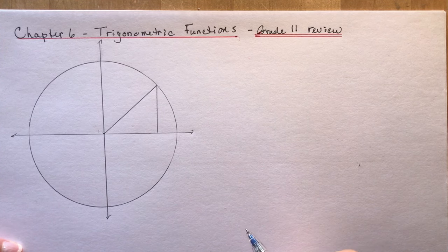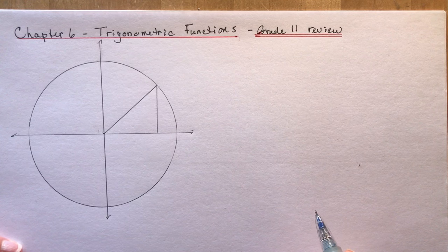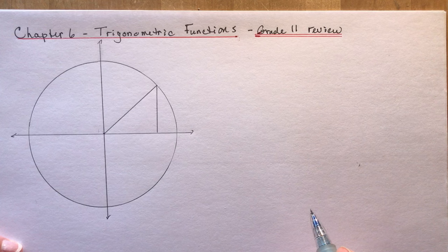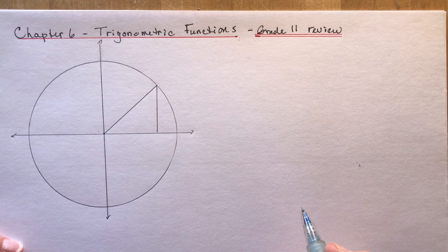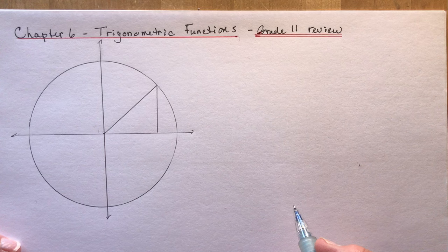The first thing we need to talk about is what sine and cosine are and what all these things mean. This section on trigonometry is probably the hardest two chapters in your grade 12 course, so hunker down. I promise I'll make it as easy as possible, but if you're having difficulties with this grade 11 review, you can go back to the grade 11 functions course and take a look at some of the videos there if there's something specific you need to focus on.